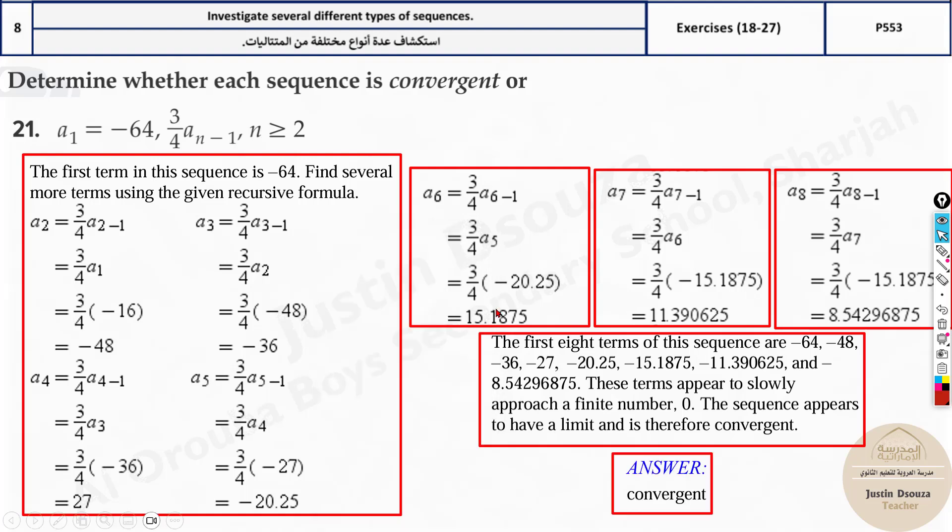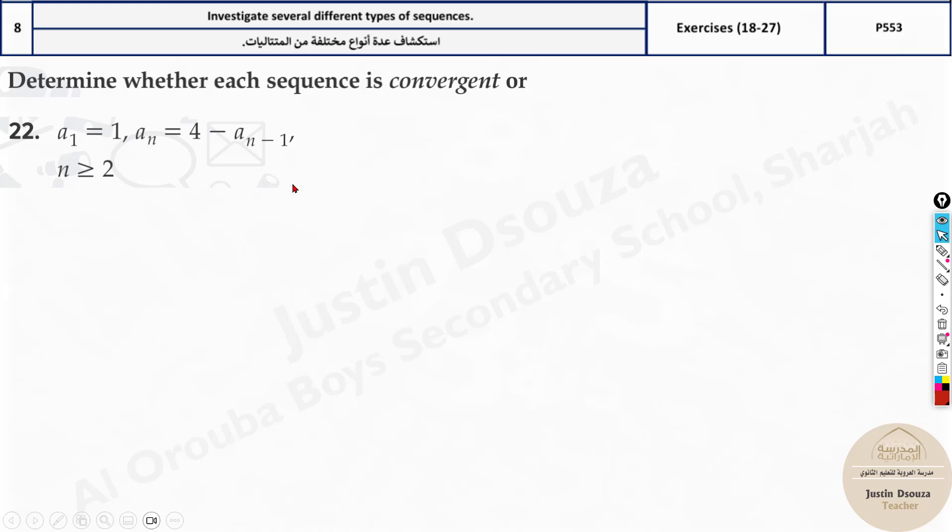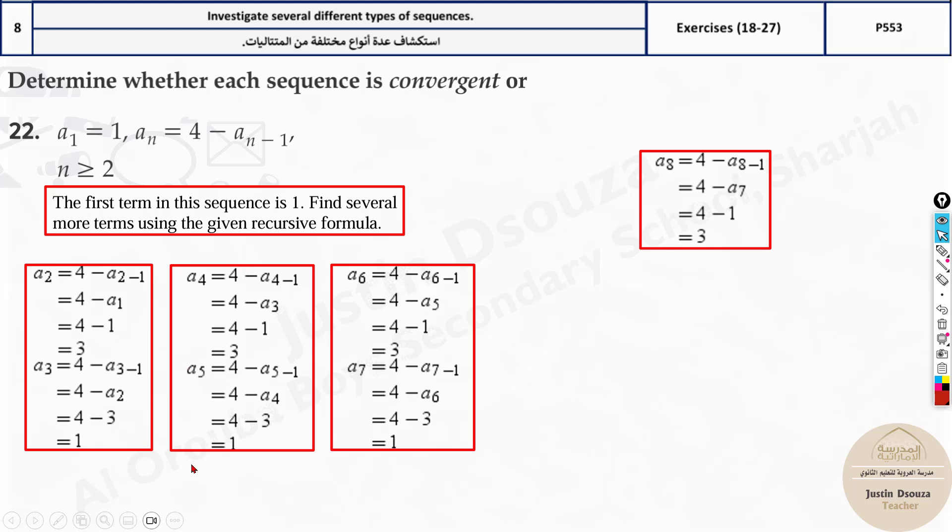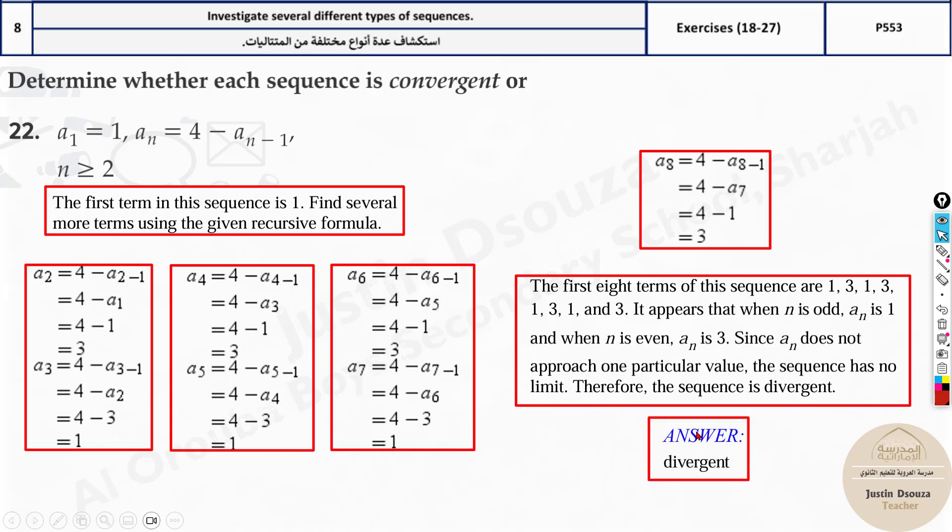Here again, you need the previous term. Same like what we did a while ago. Four minus - first time you put 1 and then just put answer and keep checking the values. You'll get this answer. This is not convergent. Look here. The answer is 3, 1, 3, 1, 3, 1. This is divergent because it's not coming close to a single answer. There are two values which is jumping. If you keep doing the values, it will be just 3, 1, 3, 1. That doesn't help us. This is not convergent. It's divergent.